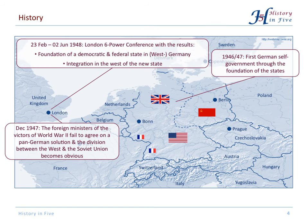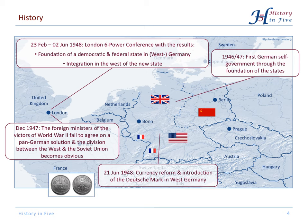The United States, the United Kingdom, and France met with the Netherlands, Belgium, and Luxembourg and decided they would found a West German state that is democratic, federal, and firmly integrated into the West.